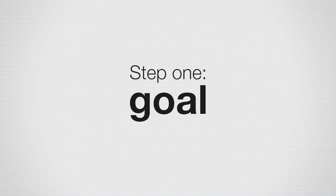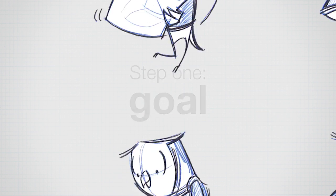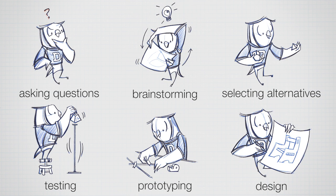The first step would be to identify a design goal, followed by asking questions to clarify and redefine that goal. Then brainstorming ways to meet that goal, selecting alternatives, designing and prototyping, and then testing that prototype. And finally, redesigning if it didn't work.